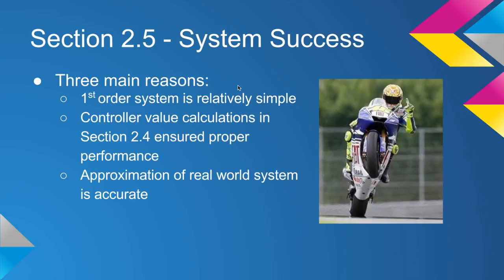As we saw in the previous slide, both of our system performance goals are met. The settling time in both cases was less than 60 seconds and the final value both with and without a disturbance was 11.11 meters per second or 40 kilometers per hour.